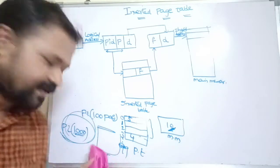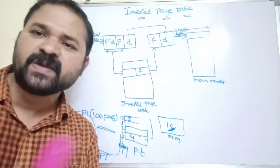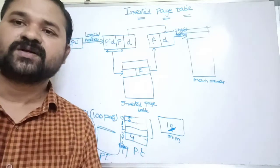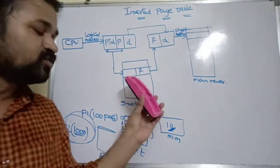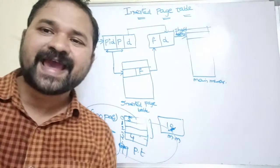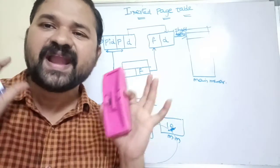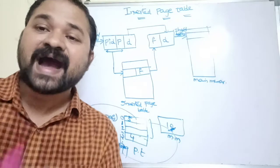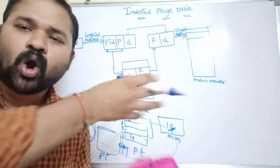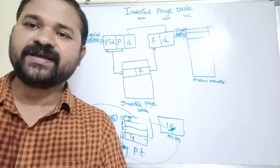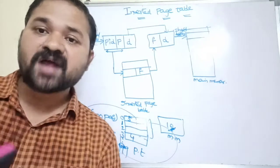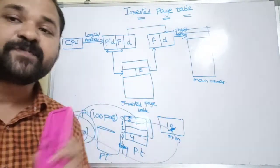Some pages are not residing in main memory, so there is no need to store that information inside the page table. Also, each process has its own page table — if we have 100 processes, we have to maintain 100 page tables, and each must contain all pages' information even if those pages don't reside in main memory. In order to overcome this problem, we use the inverted page table.